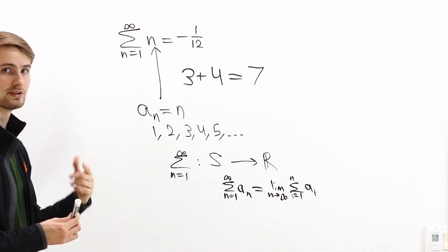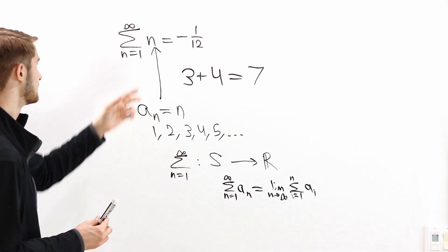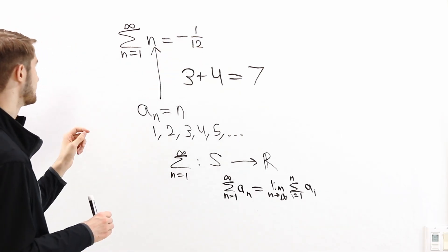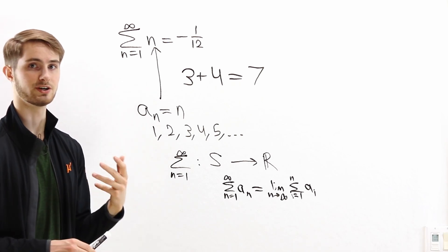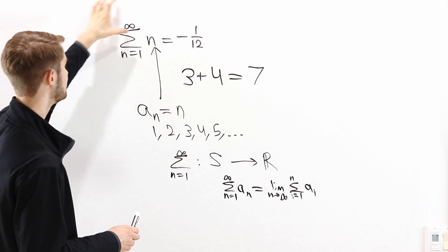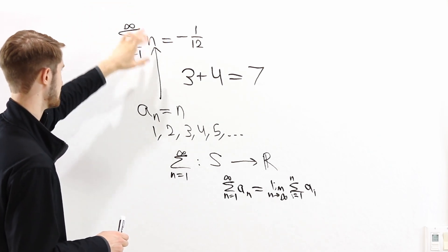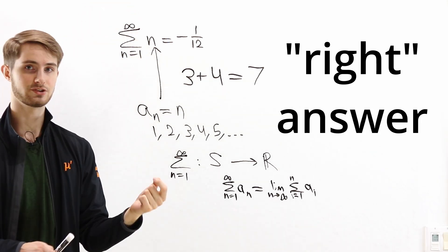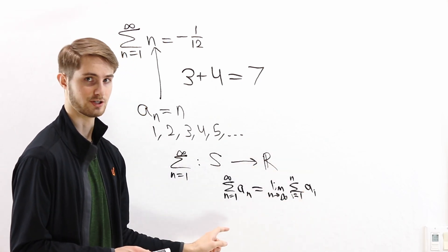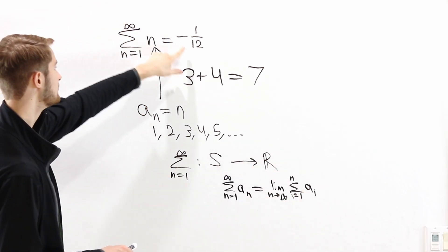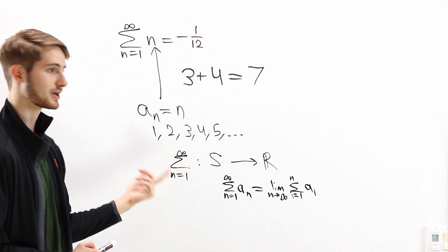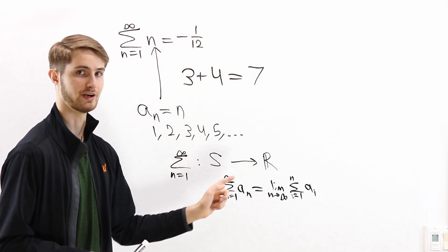There's another extension of infinite sum that gives us the answer of negative one twelfth. It has to do with the analytic continuation of the Riemann zeta function. The important part is that it's an infinite sum function that gives the right answer for series that converge under the original definition, but also gives an answer for sums that don't converge under that original definition.